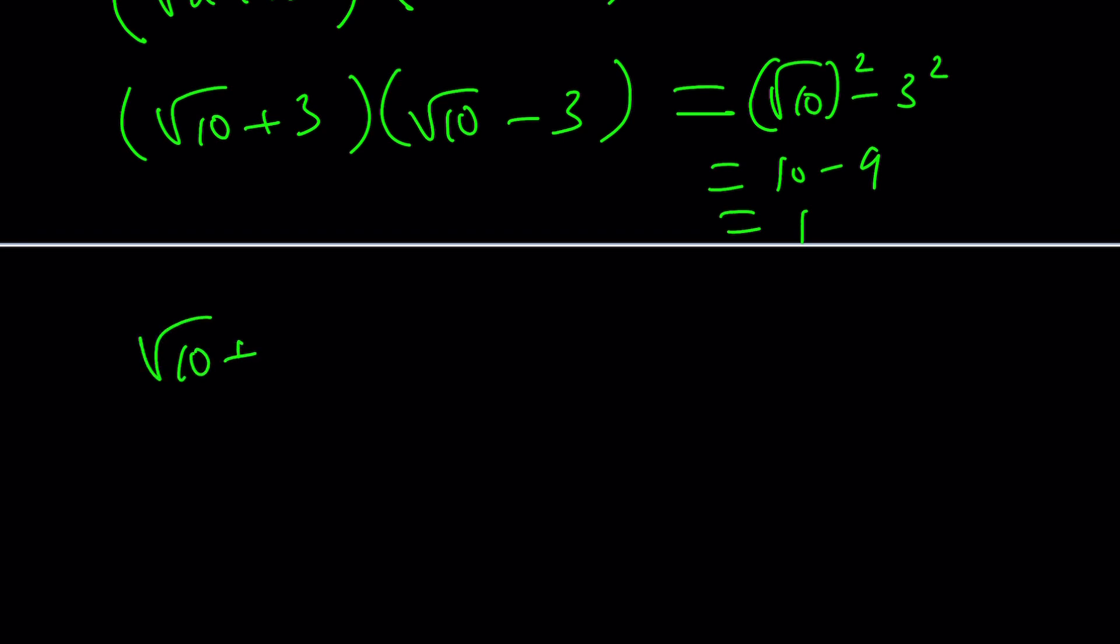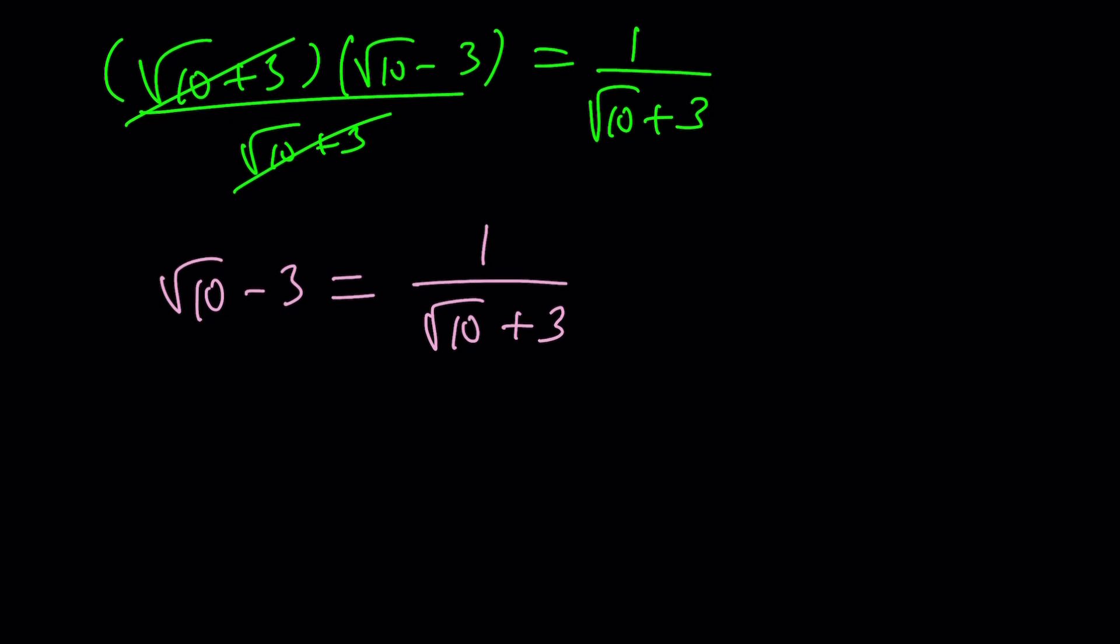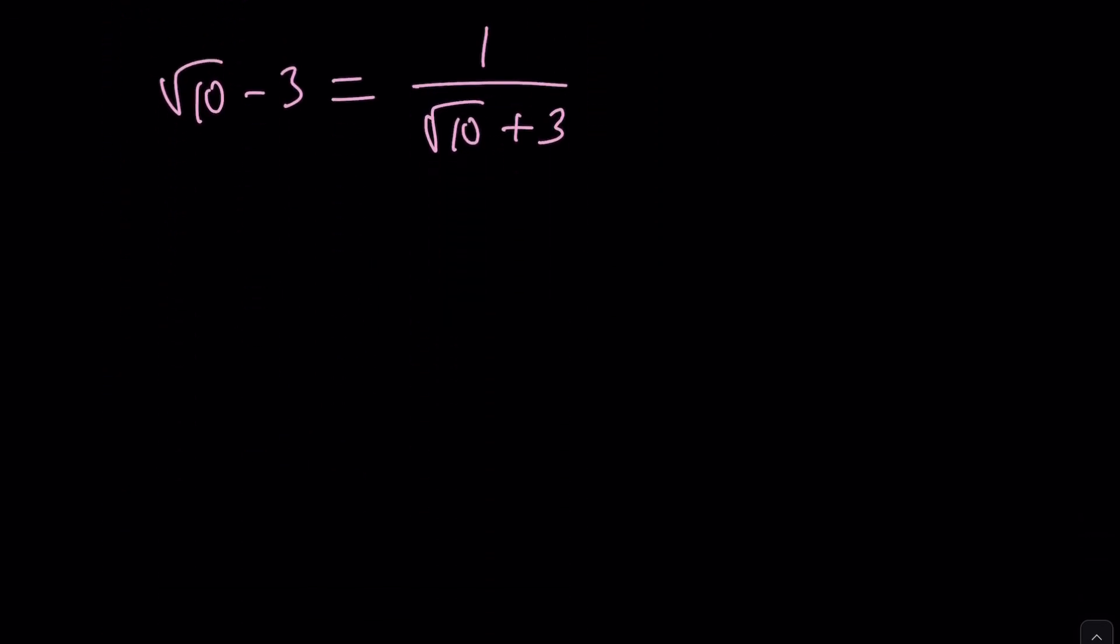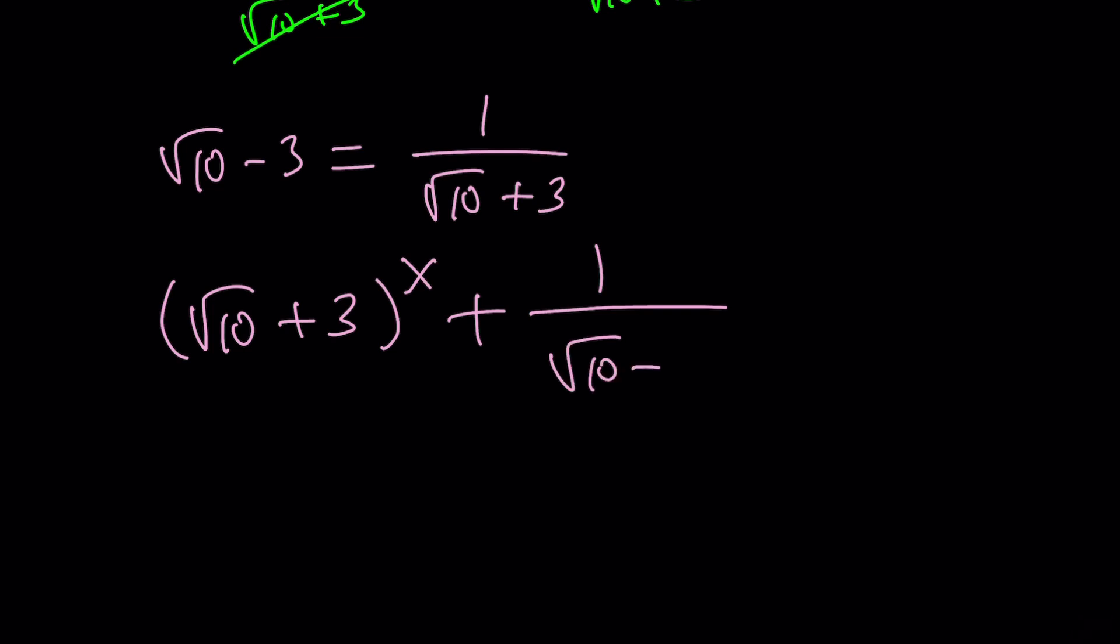So since this times this is 1, we can actually divide both sides by one of these. Like how about dividing both sides by root 10 plus 3 and do it on both sides and then you'll get this. So this shows you that these two expressions are reciprocals. Make sense? Cool. So now we have the following, how can we use this? Here's the idea. You can go ahead and replace square root of 10 minus 3 with 1 over square root of 10 plus 3, so that we can get the same base eventually. Let's go ahead and write it down.